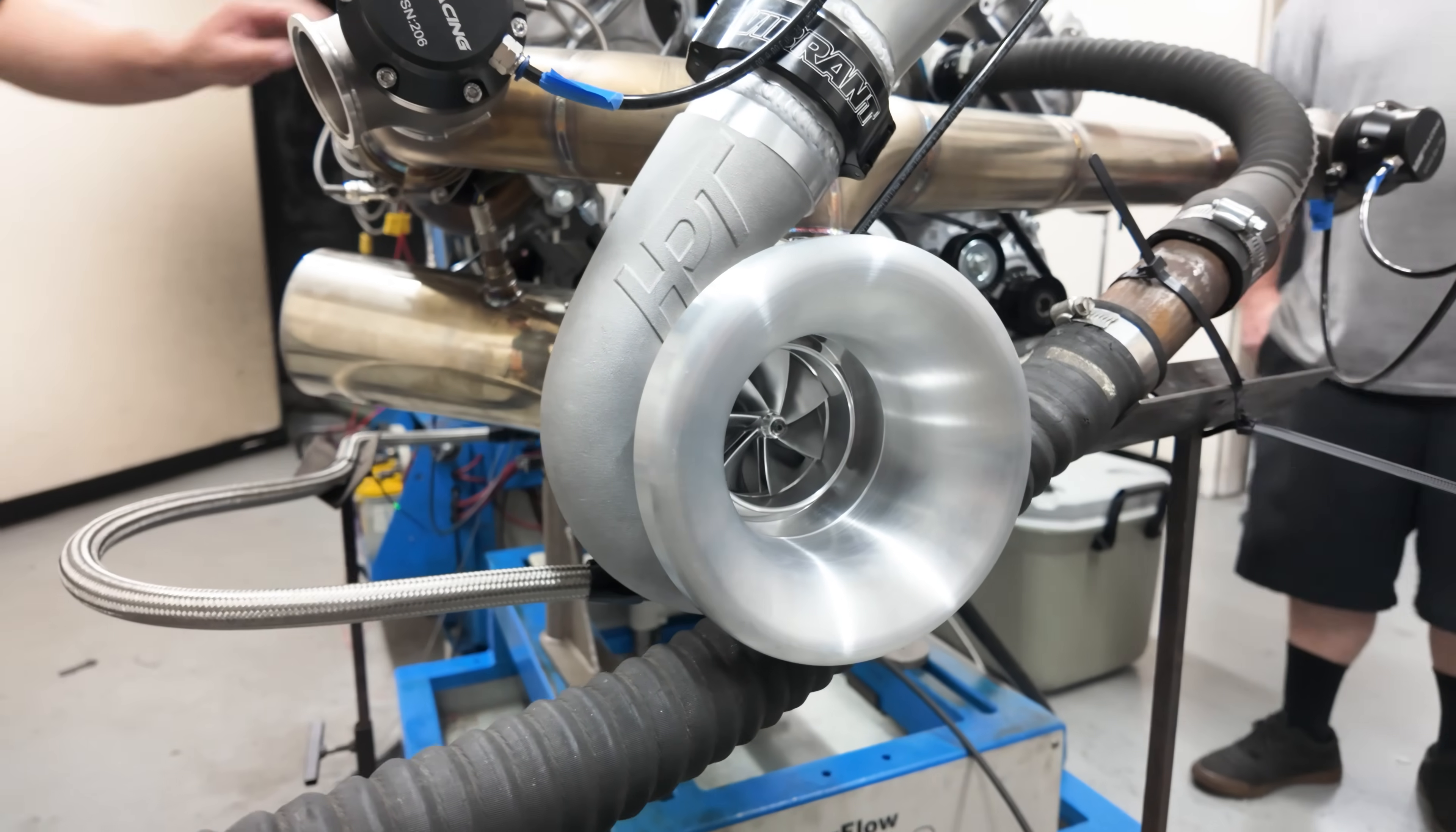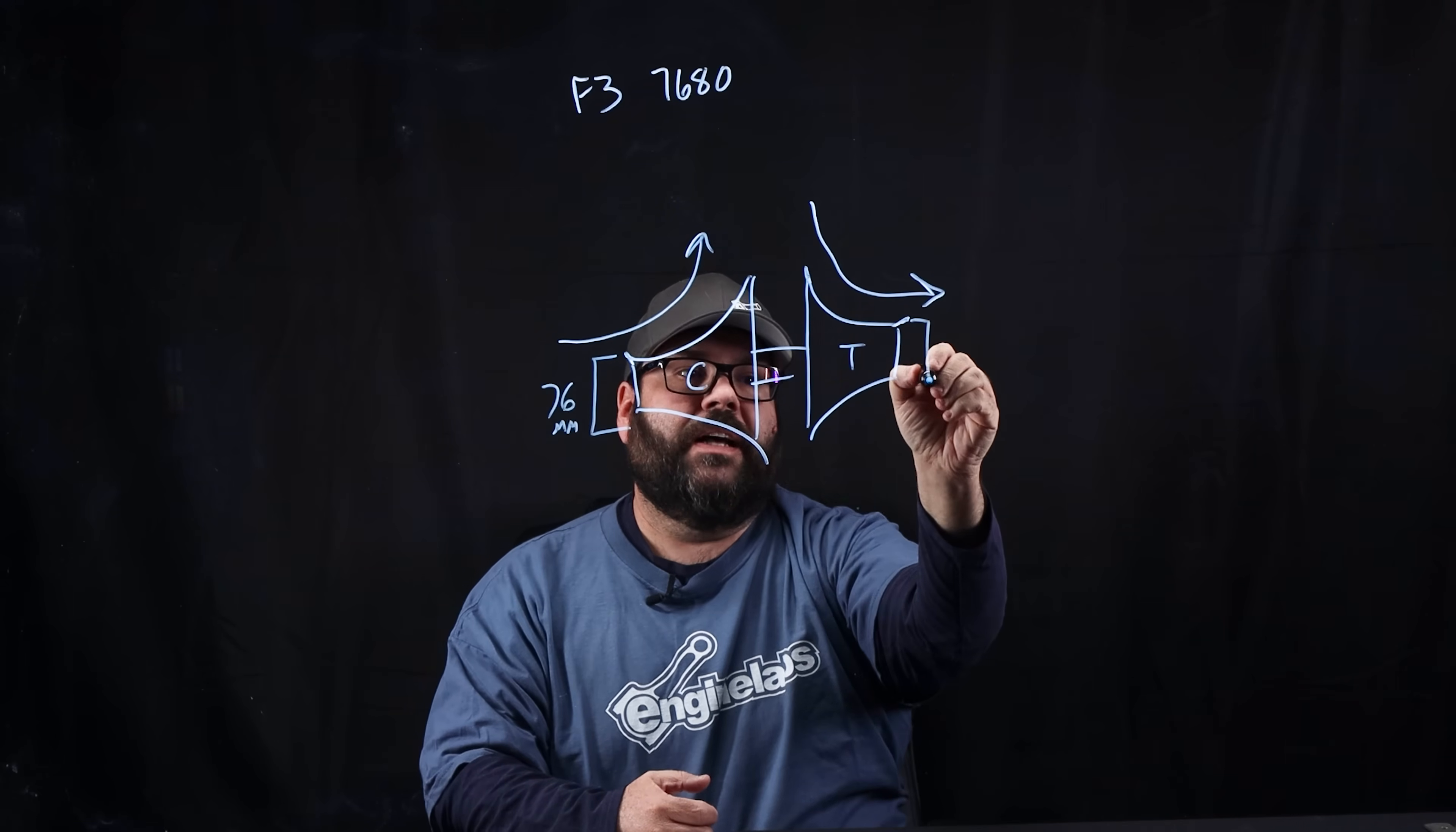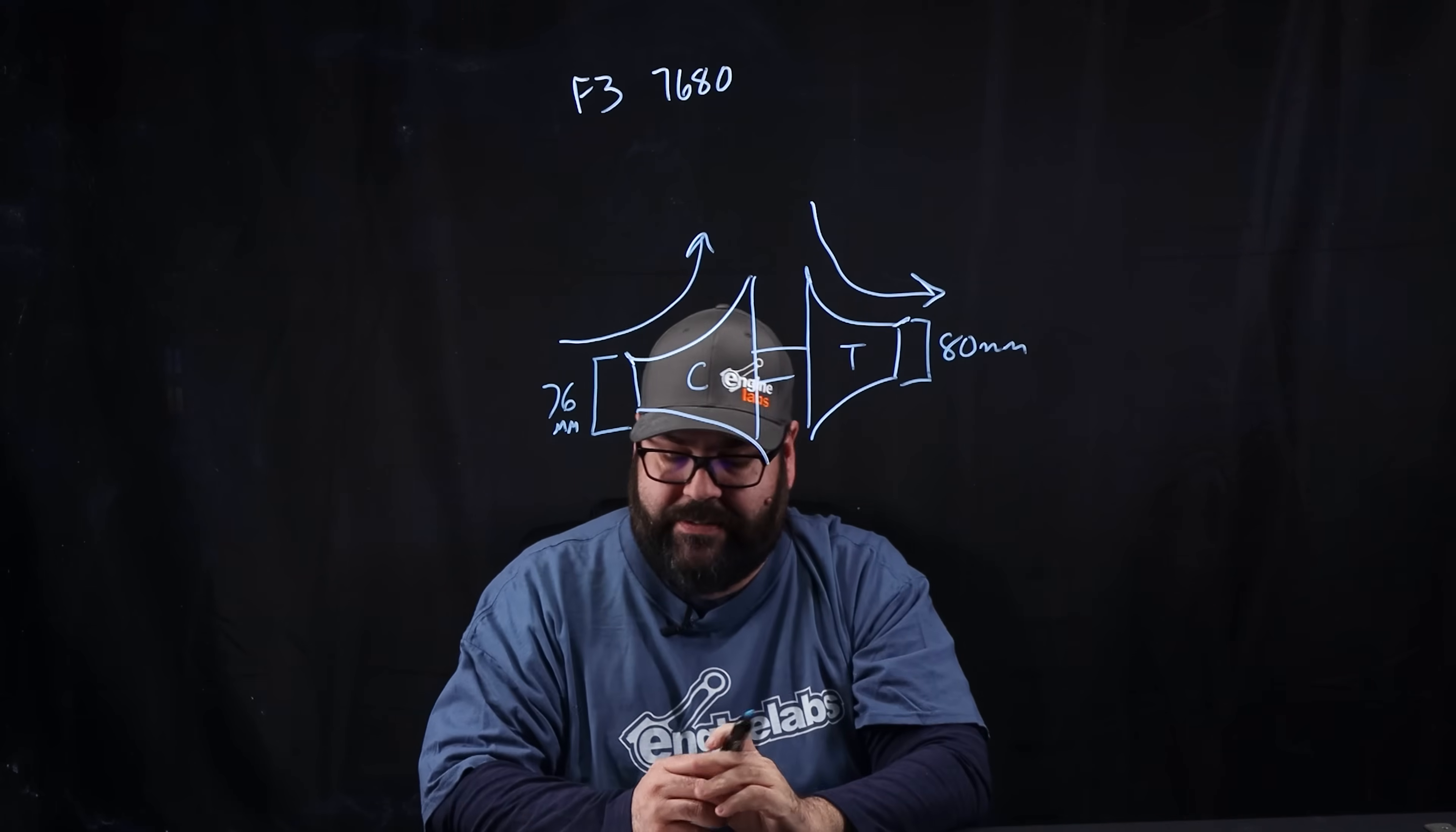So what does that name mean? Well, that means that the inducer of the compressor is 76mm, and the exhaust exducer is 80mm. So that's how that's explained.